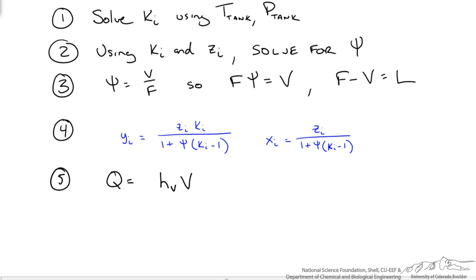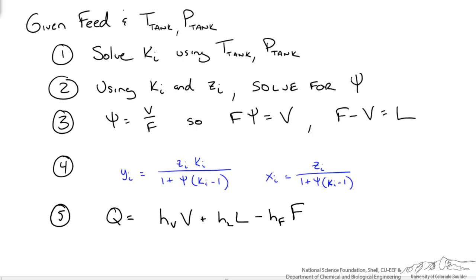The last thing we do is solve our energy balance. Figure out what is our heat that we are adding to our system in the pre-heater. Since we know the compositions and our mass flow rates, we figure out the enthalpies associated with each stream and calculate q.